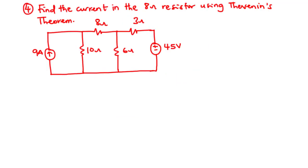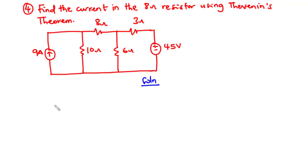For the last example, find the current in the 8 ohms resistor using Thevenin's theorem. We are going to find the current in this 8 ohm resistor using Thevenin's theorem. The first thing we need to do is to remove this 8 ohms resistor, label the terminals, and find the value of Vth. So let's redraw this circuit.